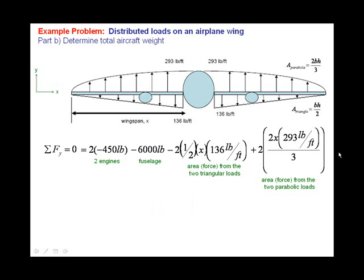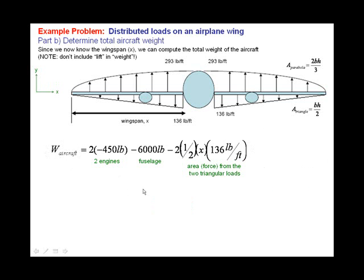Well, now that we know this wingspan, we can determine the total aircraft weight. So let's use this equation that we had previously established for the total forces having to equal zero. Now the weight of the aircraft should not include the lift. So let's get rid of that part from our equation and solve for the weight of the aircraft, which is just the engines, the fuselage, and the two triangular loads, the weight of the wings and the fuel in those wings.